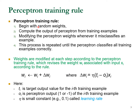The perceptron training rule is simple: begin with random weights, compute the output value, and using the formula, keep updating W whenever there is error. The rule is clear — you begin with random weight, compute output, and update weights by repeating this process. Delta Wi is defined as learning rate eta times (T minus O) times Xi.